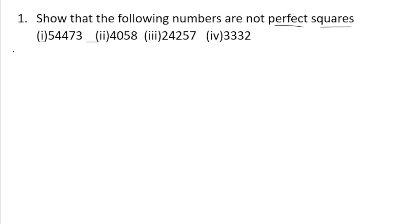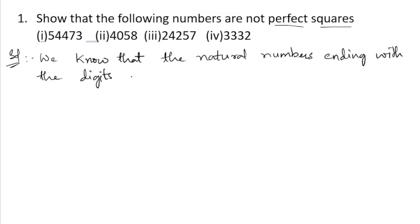So we already learned one point. Let us write down that we know that the natural numbers, if they are ending with the digits 2, 3, 7, or 8, then that number will not be a perfect square.